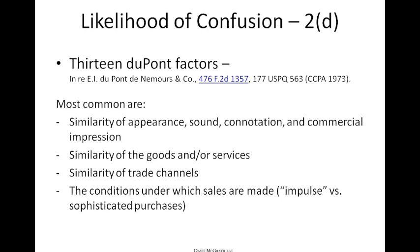Turning now to the most common types, we'll first talk about likelihood of confusion. This happens when you try to file a trademark application and there is something already on file which the trademark office believes is confusingly similar to something already on record. When evaluating likelihood of confusion, there are 13 factors from the famous E.I. DuPont de Nemours case — generally called the DuPont factors. The most common are similarity of appearance, sound, connotation, and commercial impression; similarity of goods and/or services; similarity of trade channels; and the conditions under which sales are made, such as impulse purchases versus sophisticated purchasers.